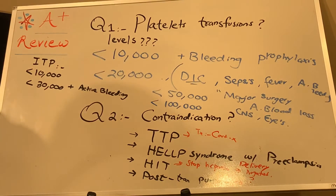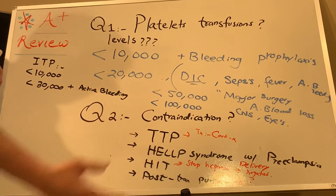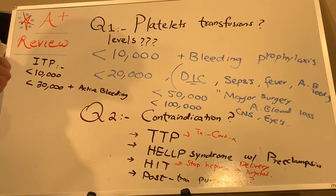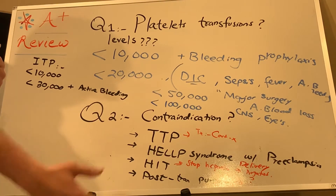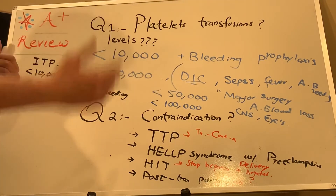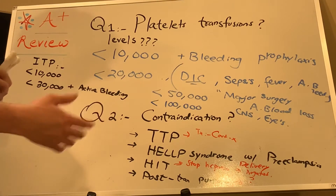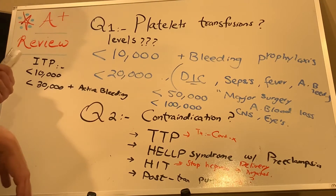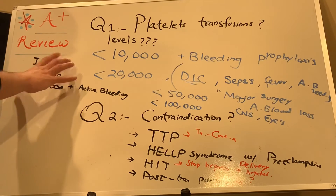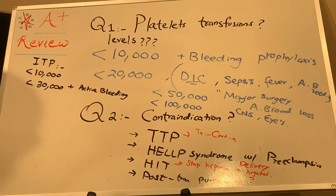Contraindications — when can we NOT give platelets? TTP, HELLP syndrome, HIT, post-transfusion purpura. There may be more contraindications, so make sure you pay attention to the question. Now for ITP, this is the level we should follow.